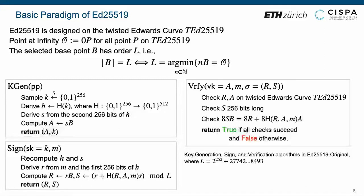The Ed25519 original consists of three algorithms. The key generation algorithm inputs public parameter and samples a key with length 256 bits. Next, it derives a 512 bits long value H by applying a hash function to this key. Then, it derives S from the second 256 bits of H and computes A equals SB. Here, this value A is the verification key and the sampled key is the signing key.